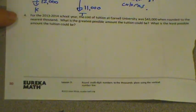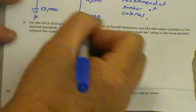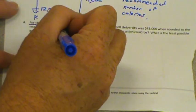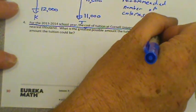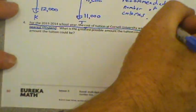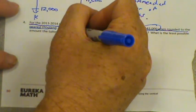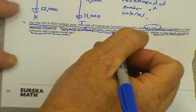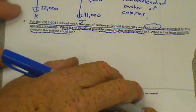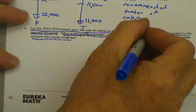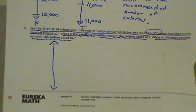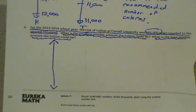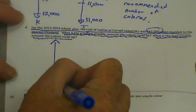Let's scroll up now. And read. What we know, for the 2013-14 school year, the cost of tuition at Cornell University was 43,000 when rounded to the nearest thousand. So I'm going to circle 43,000. Here's what we need to figure out. What is the greatest possible amount the tuition could be? What is the least possible amount the tuition could be? Wowee. Well, we need to make another vertical number line. All right. So rounded, it was 43,000. So let's do this. This is something a little new. So what we're going to do, because we don't really know yet. So we're going to do something different on the number line.